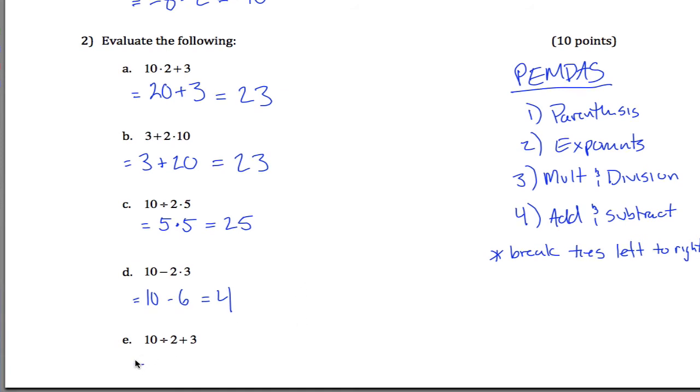Finally this last one down here. I got division and I got addition. Multiplication and division comes before addition and subtraction. 10 divided by 2 is 5, and then 5 plus 3 is 8. Those are the answers. We'll call that the end of the quiz.